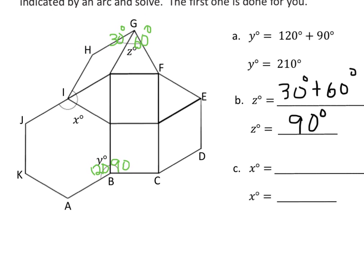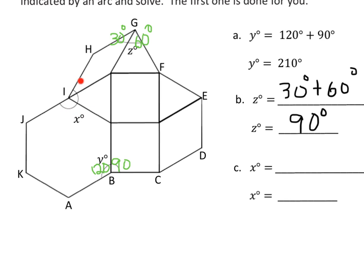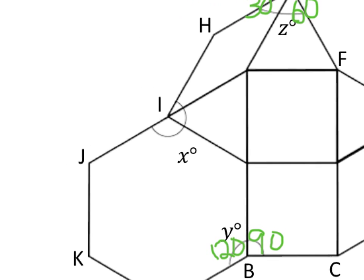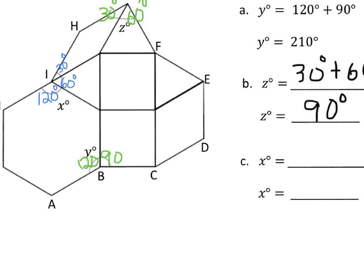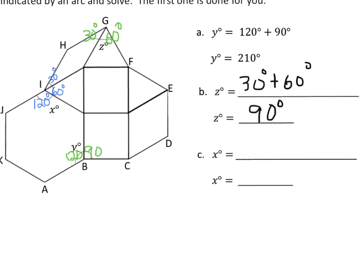The last one is X, which is way over here. I'm going to zoom in so we can see it closely. X is 120 degrees for this portion, 60 degrees for this portion, and 30 degrees for this last part. Kind of a cool pattern — 30, 60, 120 — it's doubling each time. 30 doubles to 60, doubles to 120. Nice little pattern there. So X is equal to 30 degrees plus 60 degrees plus 120 degrees, and when you add those together, you get 210 degrees.